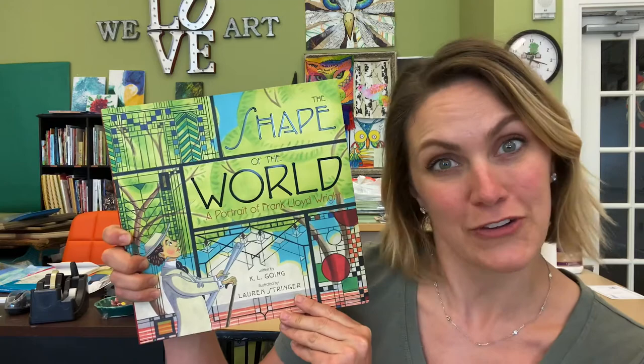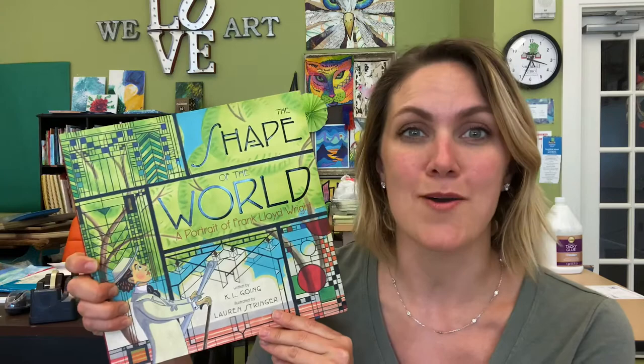Then you can always go over it with black at the end. First, we're going to read a book about Frank Lloyd Wright. It's called The Shape of the World, A Portrait of Frank Lloyd Wright. You're going to see that Frank Lloyd Wright was obsessed with shapes and circles in particular. So we're going to read the story and then we're going to make our own stained glass window inspired by Frank Lloyd Wright's stained glass window.